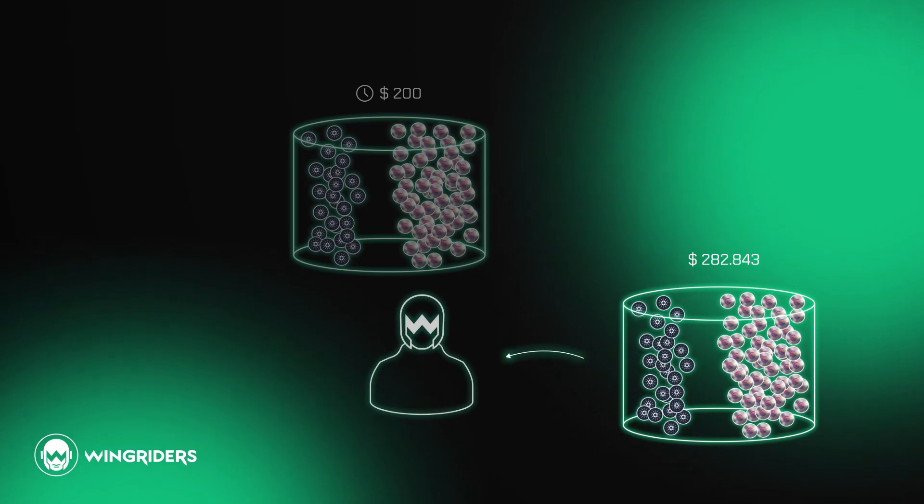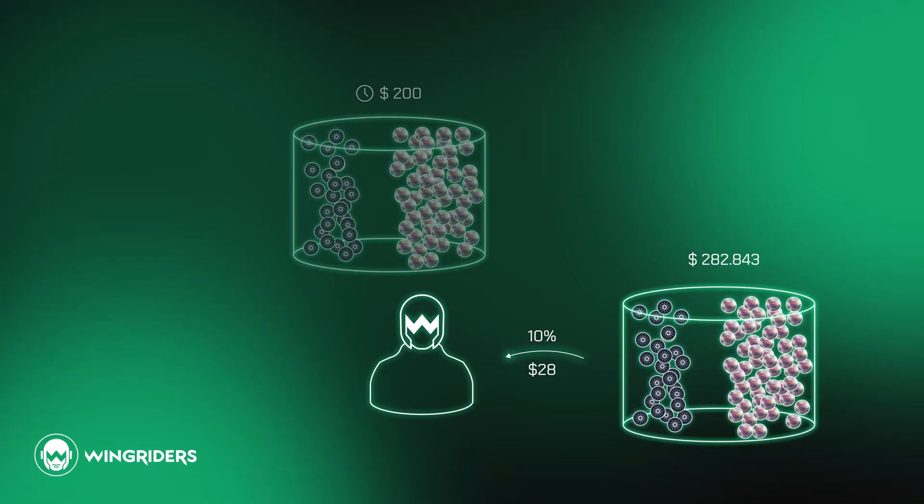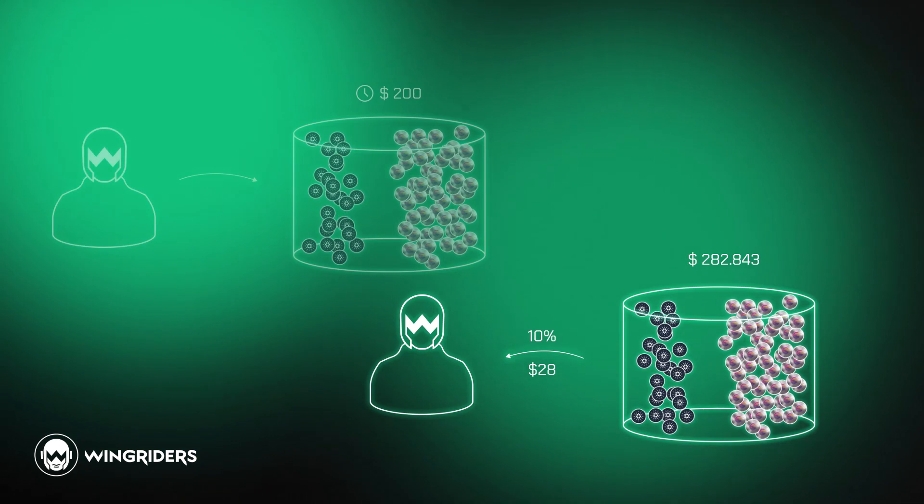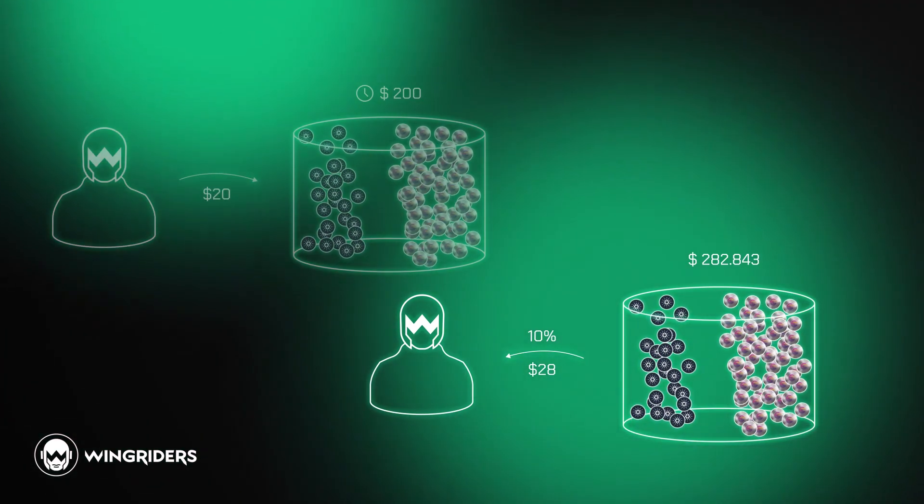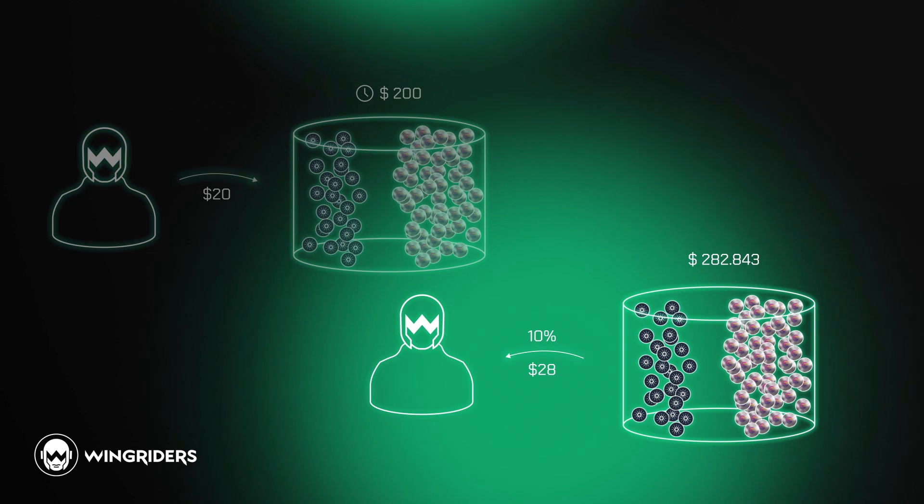If you now withdrew your 10% share of it, you would get $28. That's $8 more than you deposited. That sounds nice, but here's the catch called the impermanent loss.